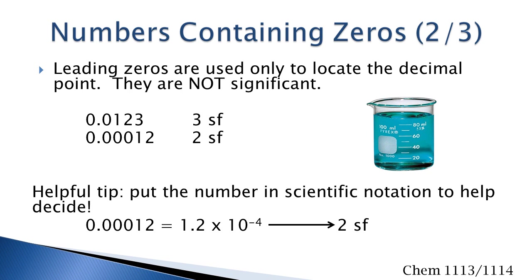Leading zeros are only used to locate the decimal point, and they are not significant. In the top number, there are three significant figures because the first two zeros, which are leading zeros, are not counted. The bottom number has two significant figures; all the zeros there are not significant either. A helpful tip is to put the number in scientific notation, which can very quickly tell you how many significant figures your number has.